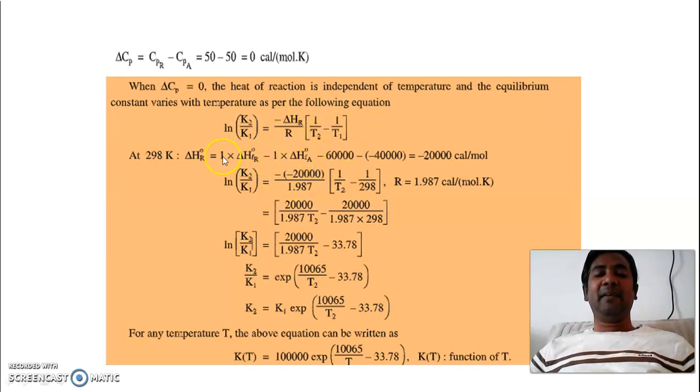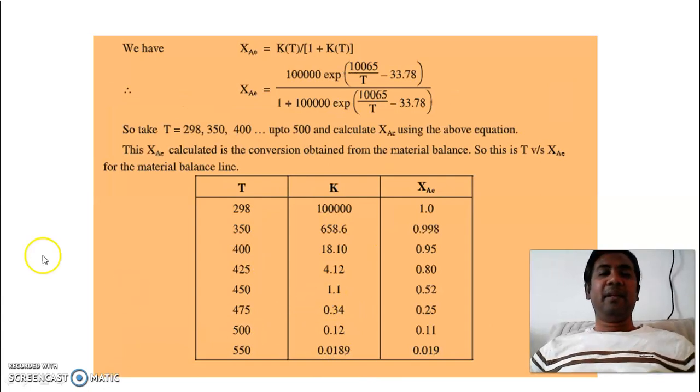And this way we will convert this equation into a simple form. And thus K(T) finally we will get 100,000 exponential of (10065/T minus 33.78). So this way step by step you can substitute the values and you can get this equation.